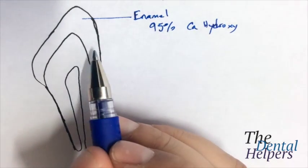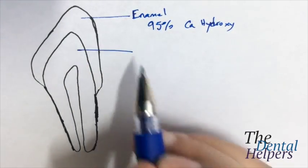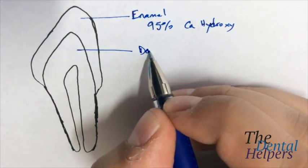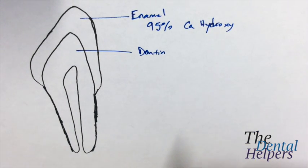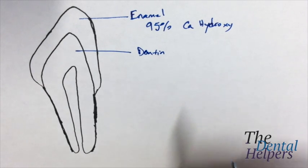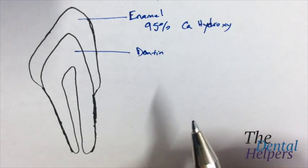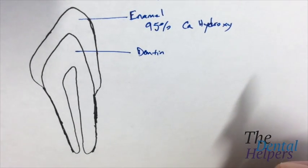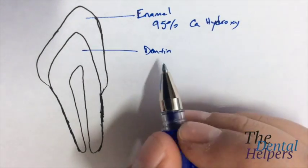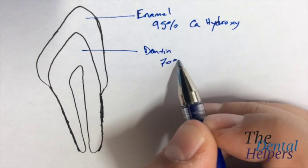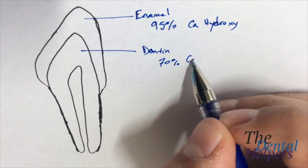Next what we're going to have is the dentin. And the dentin is not going to be nearly as strong as the enamel. Because as you probably know, enamel is the hardest structure in the body. And so, as you might have guessed it, dentin is going to have less calcium hydroxyapatite.